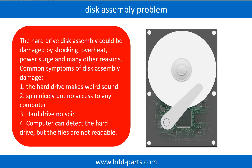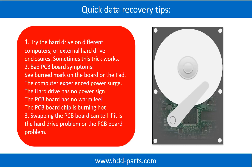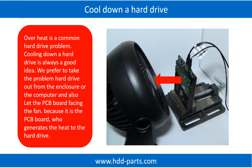If this trick doesn't work, that means the two mirrored hard drives are both damaged, or the storage was configured as RAID 0, meaning the two hard drives store different data. Overheat is a common hard drive problem — cooling down a hard drive is always a good idea. We prefer to take the problem hard drive out from the enclosure or from the computer, and let the PCB board face the fan, because it is the PCB board that generates heat to the hard drive.